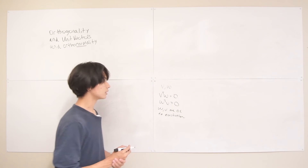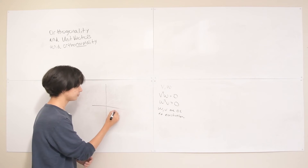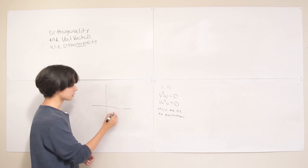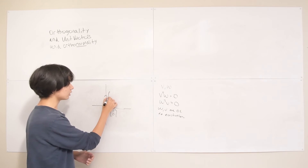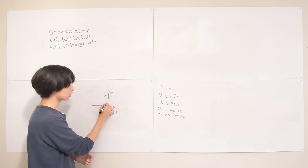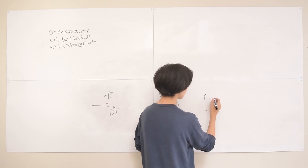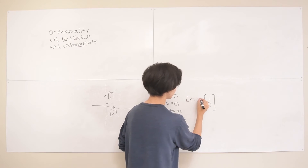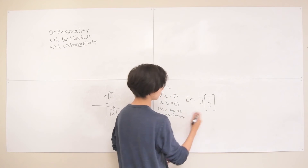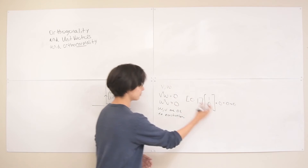A basic example is the coordinate axes in 2D space. The vectors [1, 0] and [0, 1] are obviously perpendicular. We can verify: [1, 0] · [0, 1] = (1)(0) + (0)(1) = 0 + 0 = 0. Confirmed — their dot product is 0, so they are orthogonal.